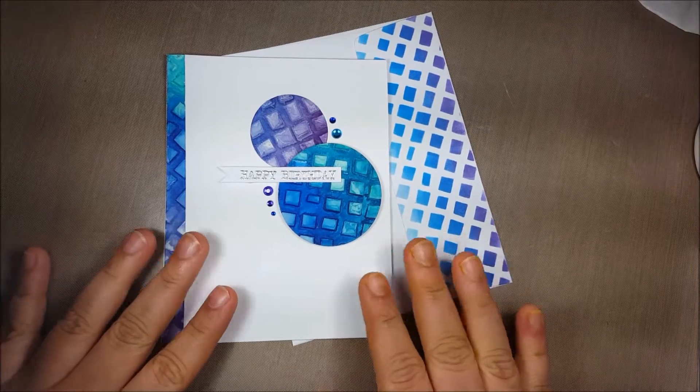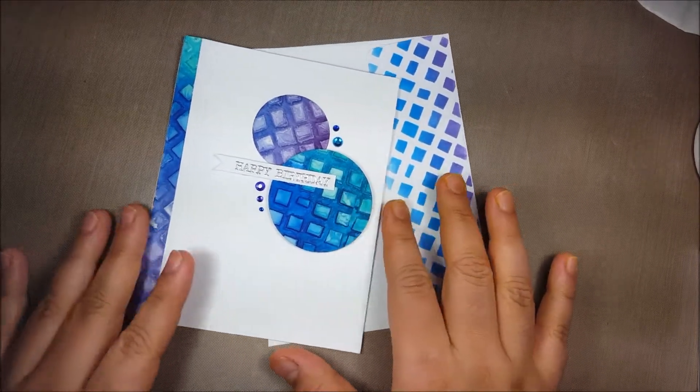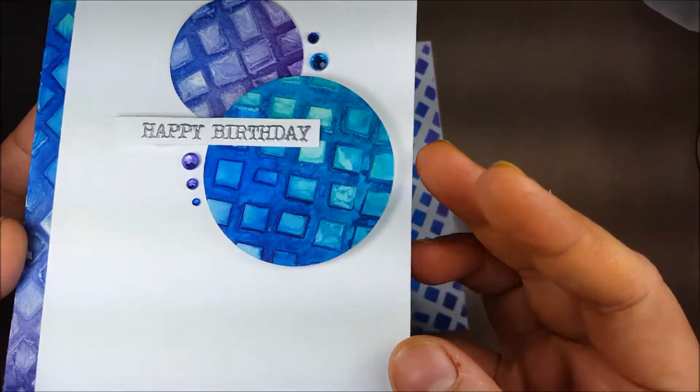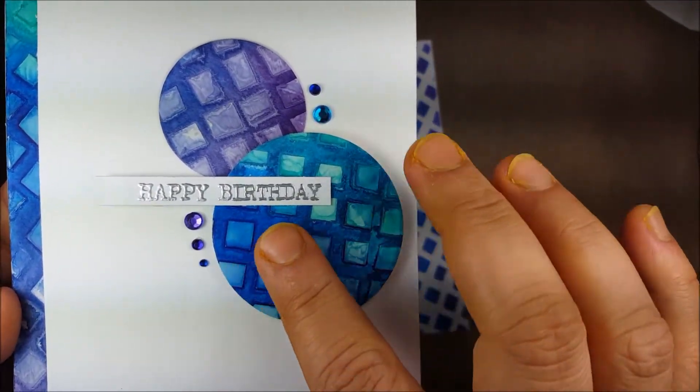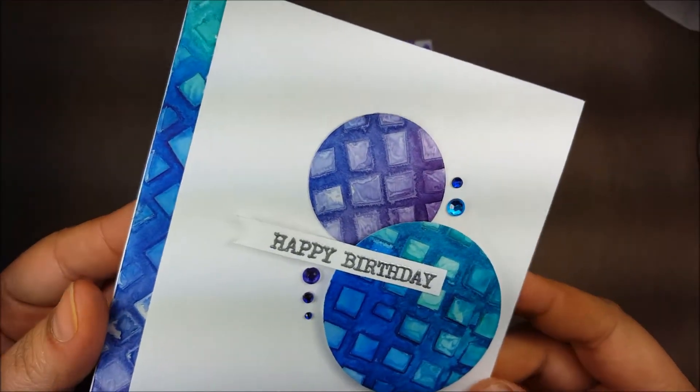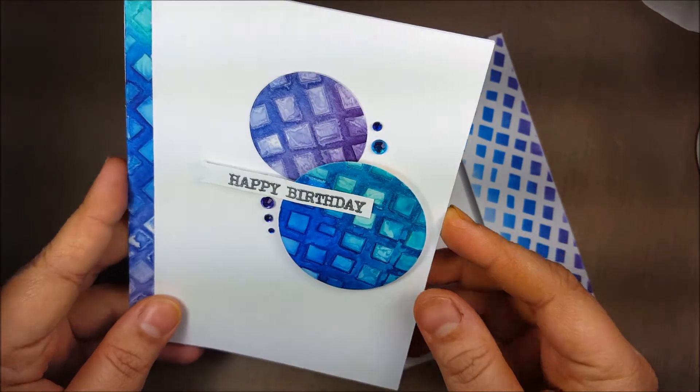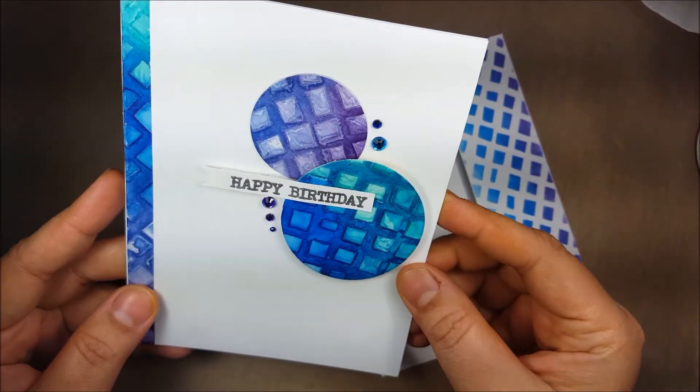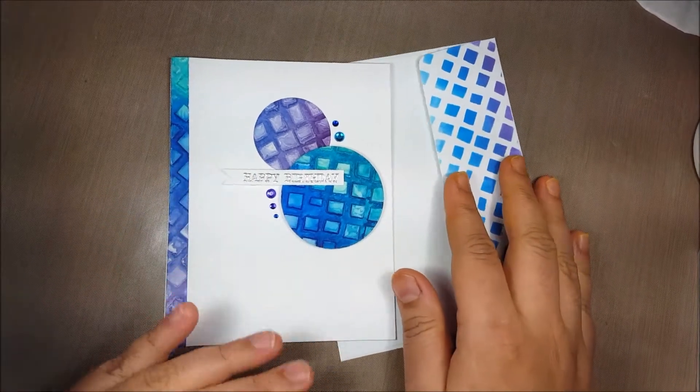This technique is called embossing through a stencil. I've used a lot of embossing paste over here and then applied some color on it to create this card using this background.